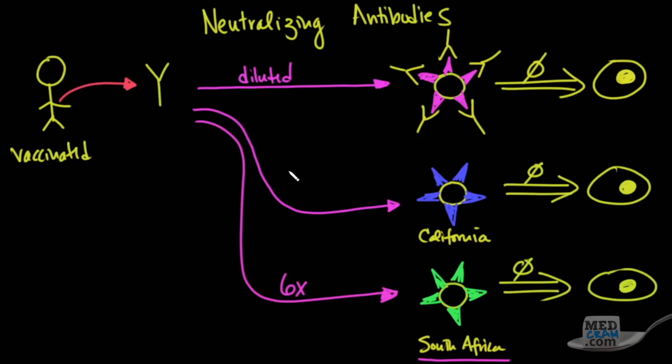When they did this with the California variant of SARS-CoV-2, it was only two times, which means that in terms of the vaccine's ability to neutralize the California variant, it seems like it's somewhere in between the regular wild-type SARS-CoV-2 virus and the South African variant.